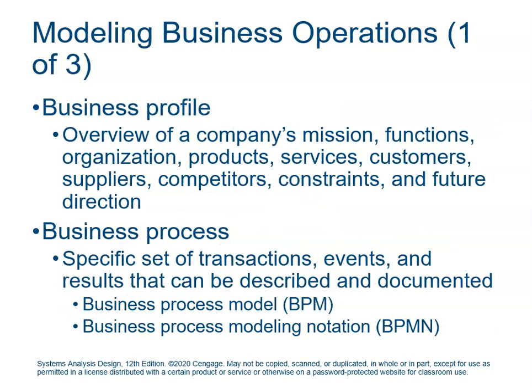When modeling business operations, we're breaking down step-by-step what a company does. If you ever develop a business plan or want to start a small business, you really need to analyze these things. Your business profile is the 30,000-foot view: what's your mission, your products and services, who your customers are, who your competitors are, where you're sourcing items, and where you see the company in a five or ten-year plan. The business process covers specific transactions and events — for example, we bring in widgets from a supplier, they go into our stock system, then out to our consumers.